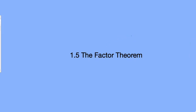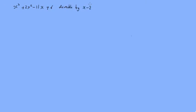Today we're going to be looking at the factor theorem. Previously we've been looking at how to do division of polynomials. So let's consider the example we looked at in the last lesson. We had x cubed plus 2x squared minus 11x plus 6, and we found that it was divisible by x minus 2 with no remainder. This tells us that x minus 2 is a factor of this polynomial, so we can write x cubed plus 2x squared minus 11x plus 6 equals x minus 2 times x squared plus 4x minus 3.